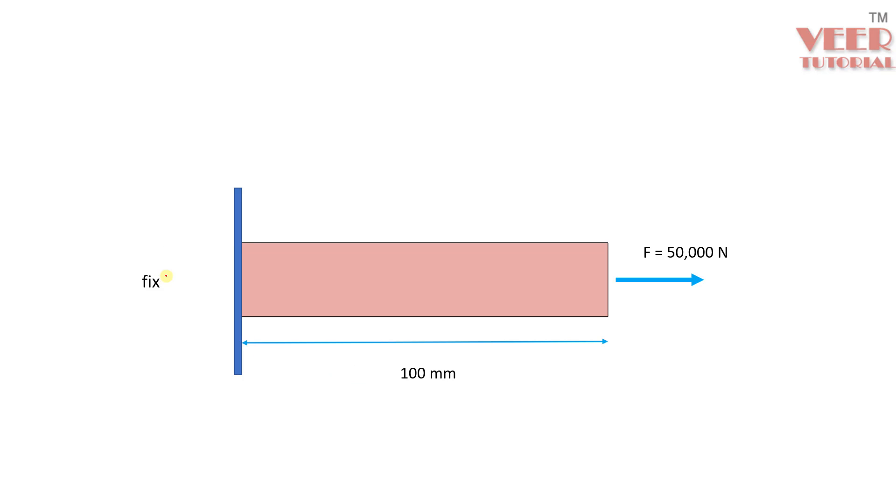So we are going to simplify it like this. Here what we will do is, we are going to fix this plate from the left side. Here it is fixed. And on the right side, the force of this value is applied. When you apply this much force on the right side, automatically, a reaction force will be generated in the reverse direction here. And it will be equal to this force. So in this way, we can simplify our problem.